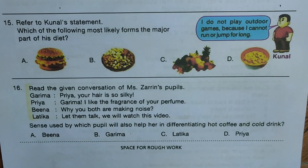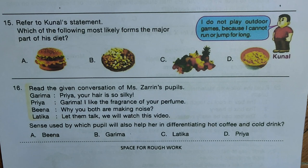Question fifteen: Kunal says he cannot run or jump for long, and as you can see he is very overweight. Which of the following most likely forms the major part of his diet? The options are A — fast food burger; B — seeds like cashew nuts and raisins; C — fruits; D — corn. All except option A are healthy foods; the burger is junk food and is probably the main part of his diet. We mark A as the answer.